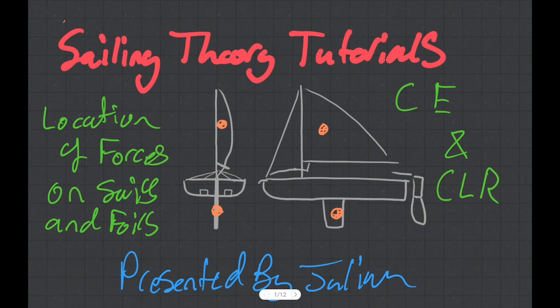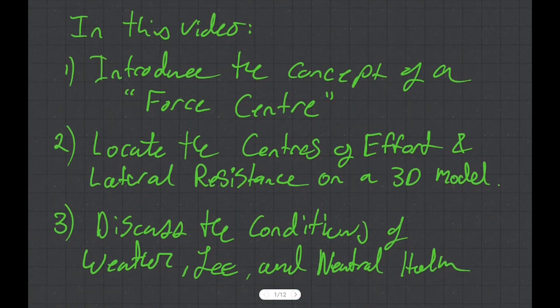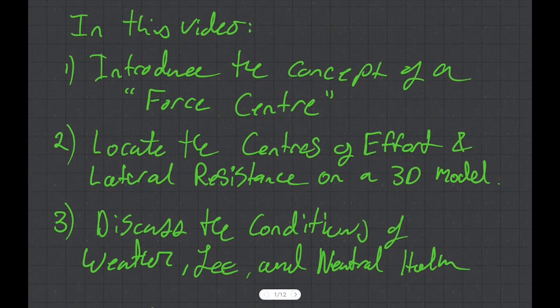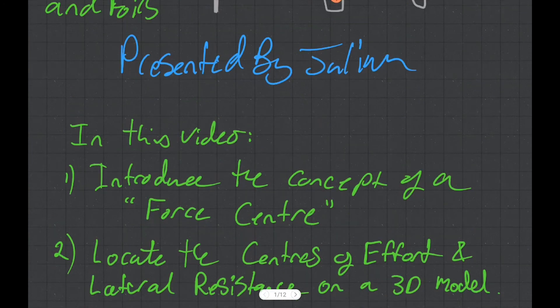This concludes my tutorial on the location of forces on sails and foils, your CE and CLR. In this video, we introduced the concept of a force centre. We located the centres of effort and centres of lateral resistance on a 3D model, and we discussed the conditions of lee helm, weather helm, and neutral helm, and how they're associated with the different locations of the centres of effort and lateral resistance. In a future video, I'm going to talk about ways to affect the position of the CE and CLR, and how we can use this to tune our boats.